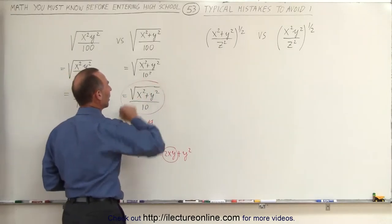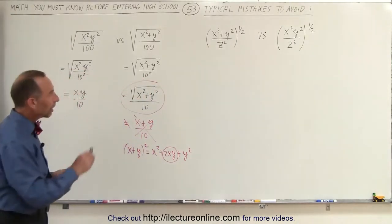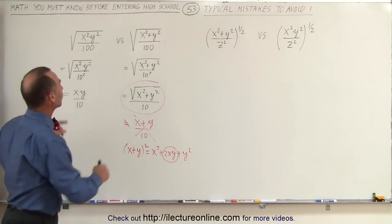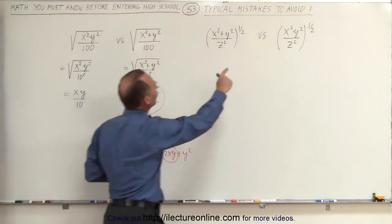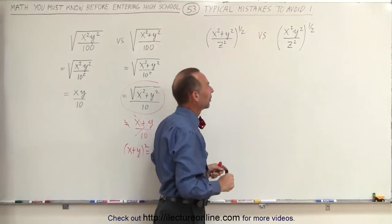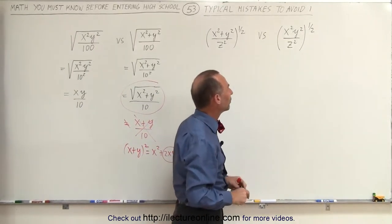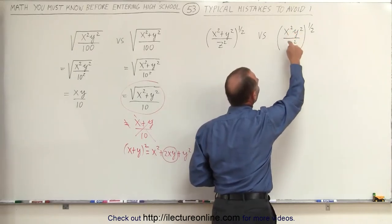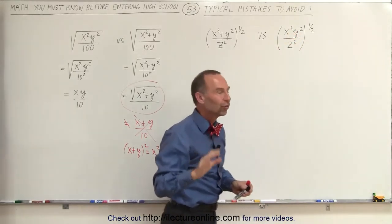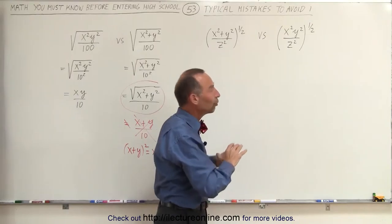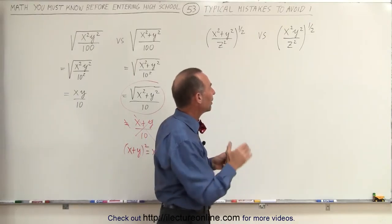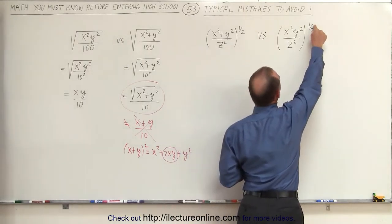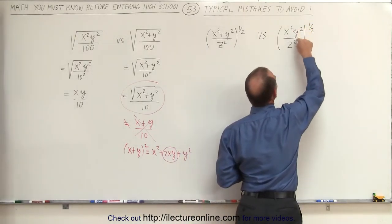This is the final format of that example. Now let's take a look at the right side, which is very similar but instead of using the radical symbol, we're using the fractional exponent. Notice we have x squared times y squared divided by z squared — no plus signs, no negative signs, no subtraction, no addition, simply multiplication and division. Which means we can take the fractional exponent and apply it to each of the exponents there.